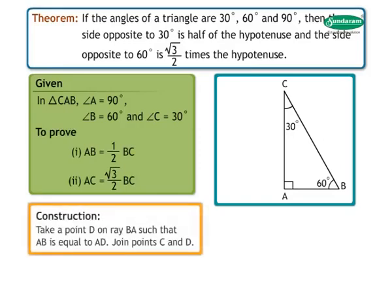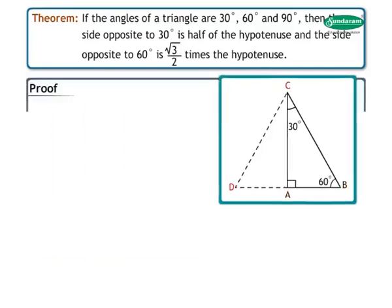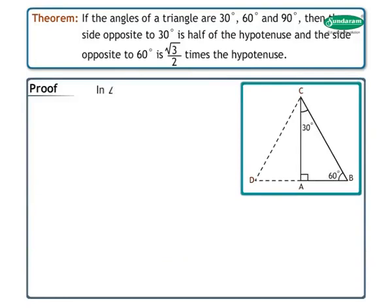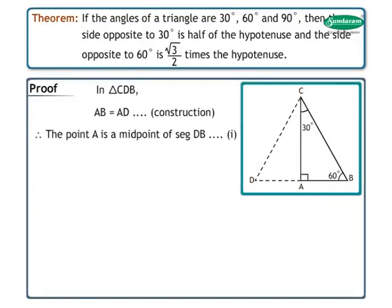Construction: Take a point D on ray BA such that AB is equal to AD. Join points C and D. In triangle CDB, AB is equal to AD by construction. Therefore, the point A is a midpoint of segment DB. Mark this as statement 1.